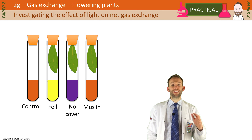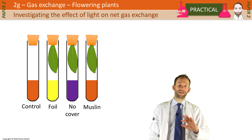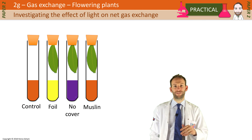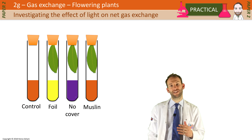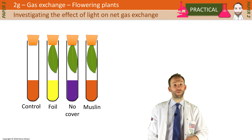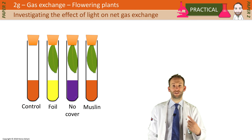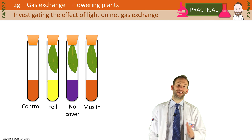The tube with muslin is getting a little bit of light, so it's probably doing about an equal amount of photosynthesis and respiration — meaning we'd expect no colour change and no difference in CO2 levels. The tube with no cover at all will use up all the CO2 inside for photosynthesis, so the hydrogen carbonate indicator will have gone very, very purple.